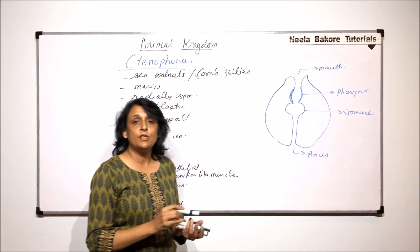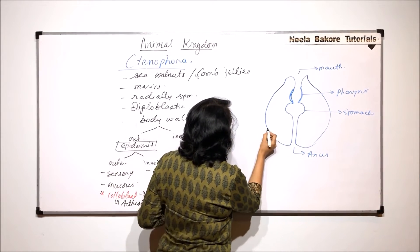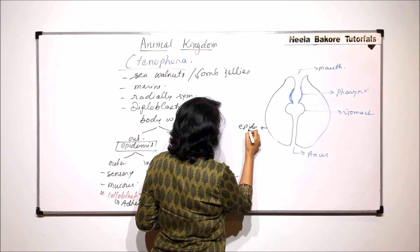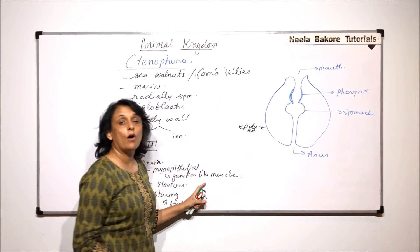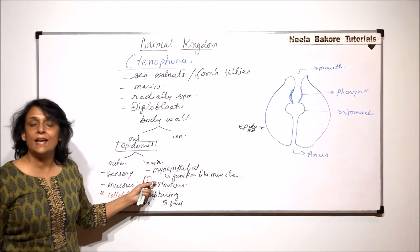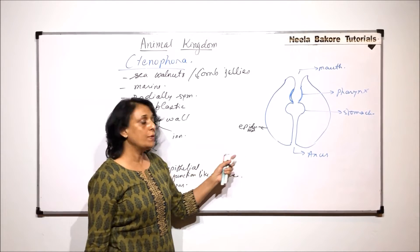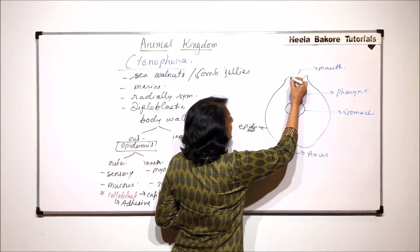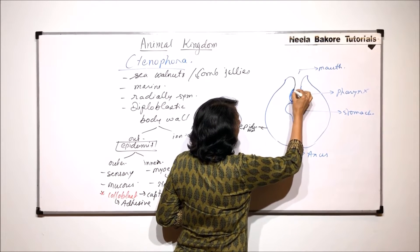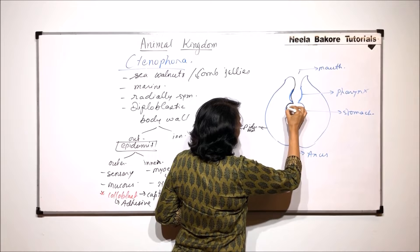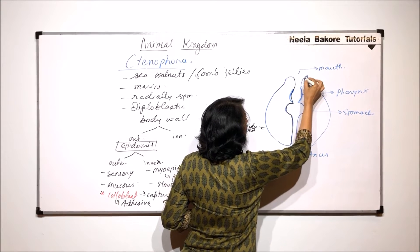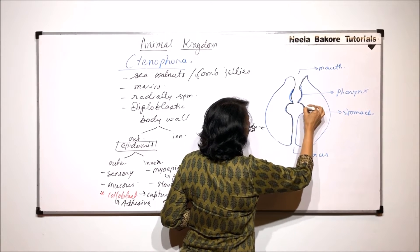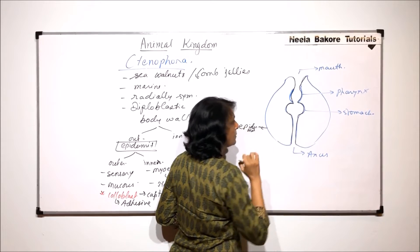The layer which we have drawn, this outer one, is the epidermis which we have just talked of - it has outer as well as inner cells. Now we are talking about the inner layer. Inner layer is nothing but the layer which is lining this digestive tract, or we can also call it gastrodermis.